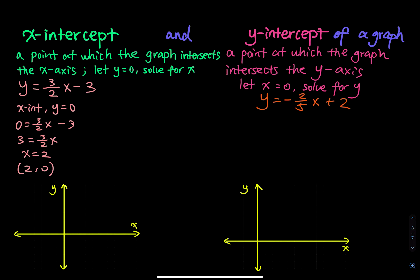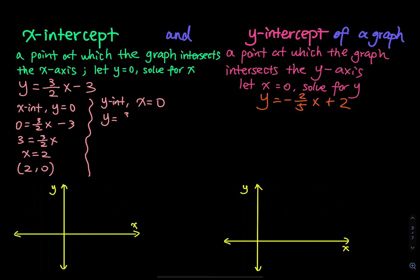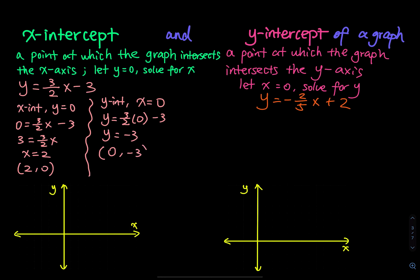For the y-intercept, we let x equal to 0. So y equals (3/2)(0) minus 3, which gives y equals negative 3. The y-intercept is also a point — an ordered pair — so you should write (0, negative 3).